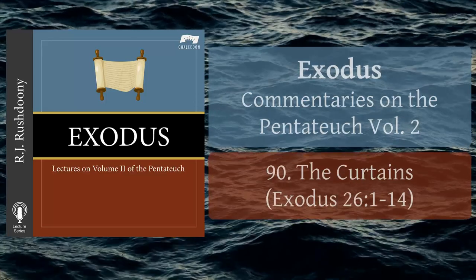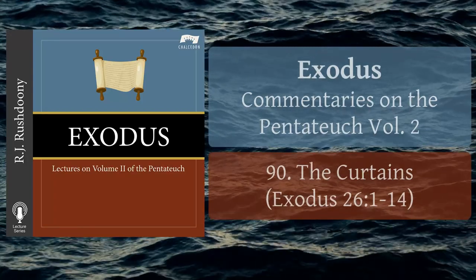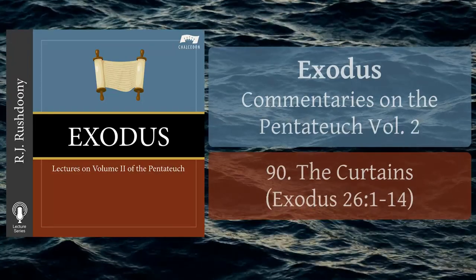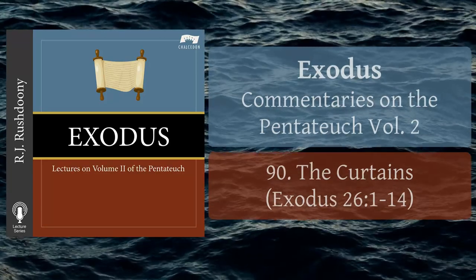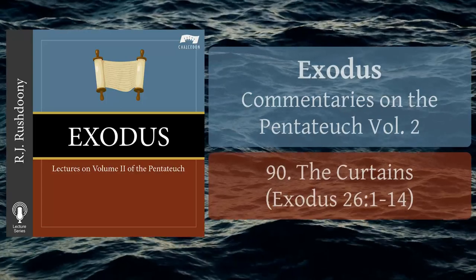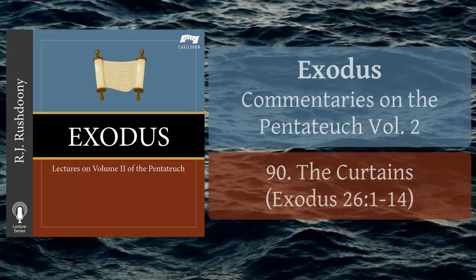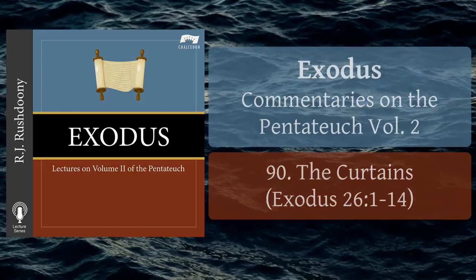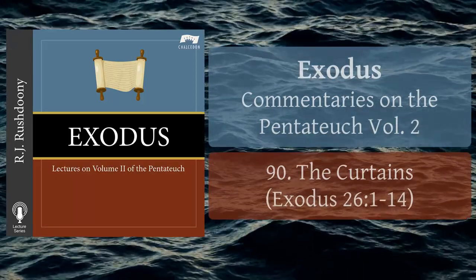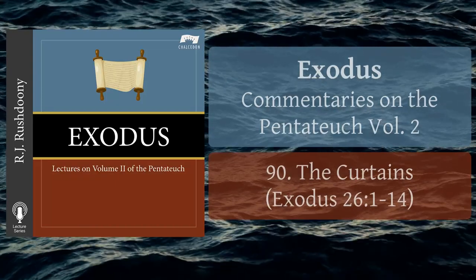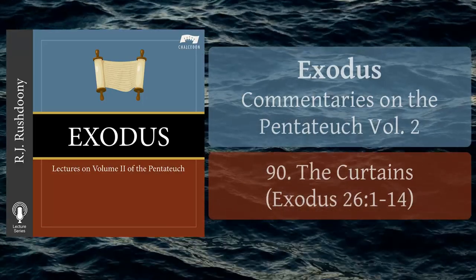A good case could be made for the coincidence of a loss of freedom and a loss of godly privacy. At the heart of biblical faith is the blunt statement that there are things which it is our moral duty to know and other things which it is presumption for us to seek to know. Moses declares: 'The secret things belong unto the Lord our God, but those things which are revealed belong unto us and to our children forever, that we may do all the words of this law.' Deuteronomy 29:29. This is a very important as well as neglected text. Those things which are revealed and which belong unto us and to our children forever are the words of God's law — the Bible.